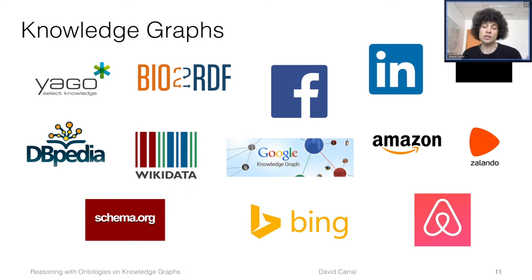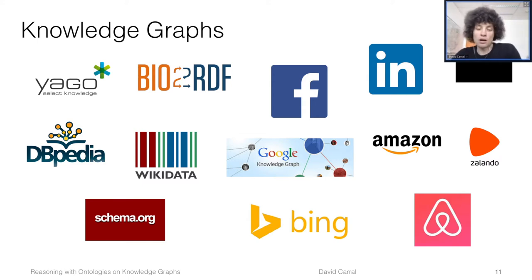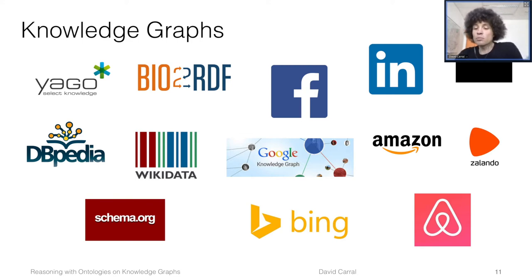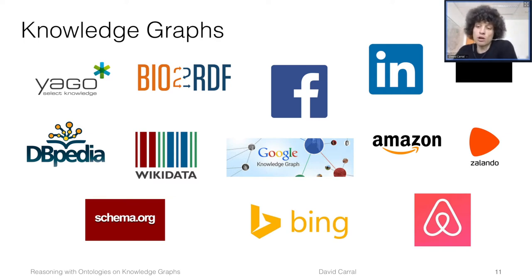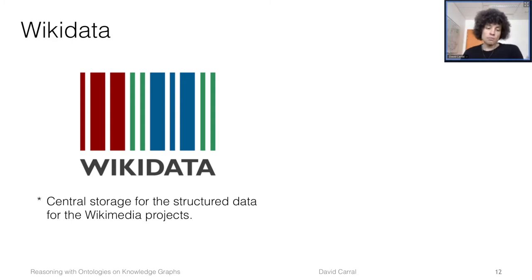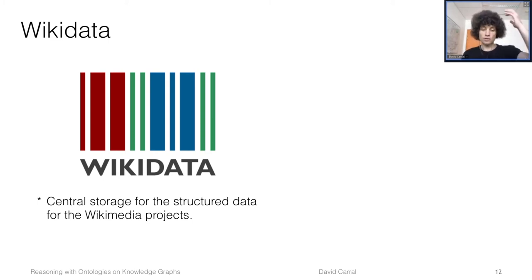To address this issue, there's an interesting development: the development of knowledge graphs. These are large repositories containing structured and semi-structured information. For example, the most famous one would be Google's Knowledge Graph. There are others developed in academia such as Wikidata and DBpedia, and even companies that are not big IT companies are starting to develop their own knowledge graphs to improve the quality of their services — for example, Airbnb and Uber. Let me tell you a little bit about one of these knowledge graphs, which is Wikidata, the central storage for structured data for the Wikimedia projects such as Wikipedia.